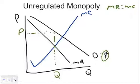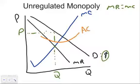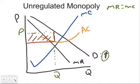Since we're making a profit, we draw in the average cost curve somewhere below the price, as long as it's below and still intersecting the marginal cost curve at the minimum point. The profit is the rectangle from the price down to the average cost curve and across — that rectangle represents the profit. That's what an unregulated monopoly looks like.